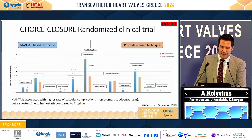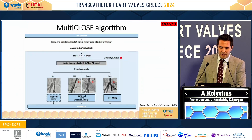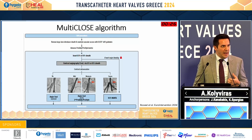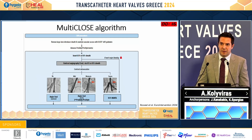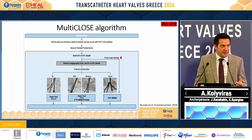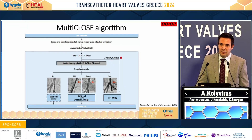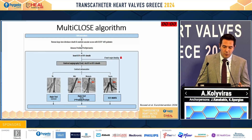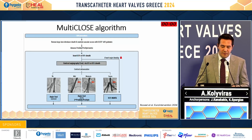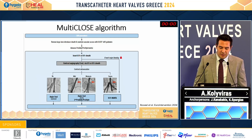Which technique is better — ProGlide or Manta? A multi-close algorithm was published recently which says we have to start always with one ProGlide. At the end of our procedure, we remove the large-bore introducer and insert a 6 or 8 French sheath to make a small contrast injection of 5 ml and check it. If there is no extravasation, we can close with one pre-close device or Angioseal. If there is mild or moderate extravasation, we can use a second ProGlide. But if there is severe extravasation, it's better to use Manta.